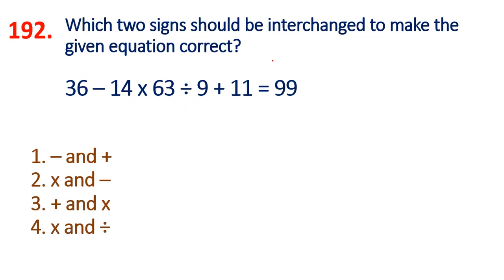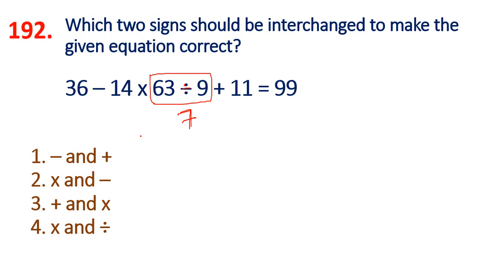So next, the 192nd question we will check. This is a random science equation — we will check 63 divided by 9, which is 7. First division we will try: minus 14 into 7 is minus 98. So minus value — what is the same question? Minus multiplication minus is minus multiplication.